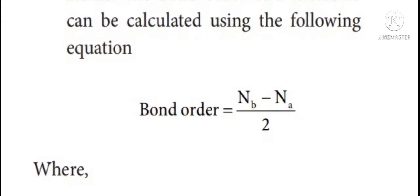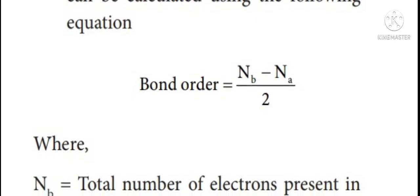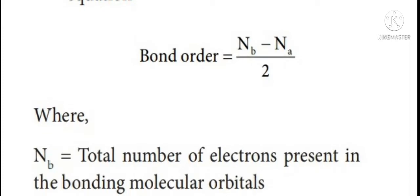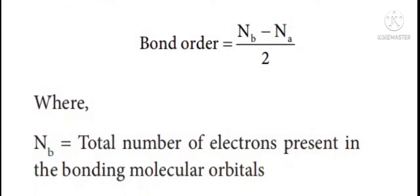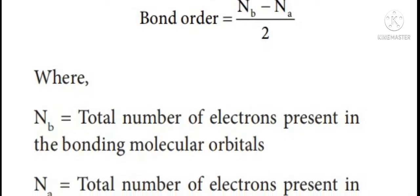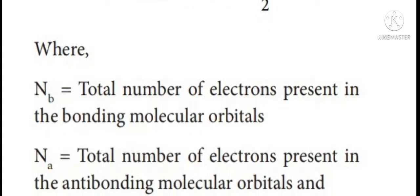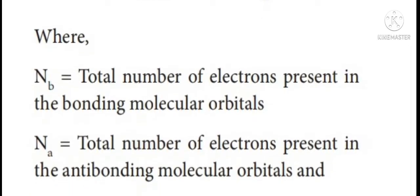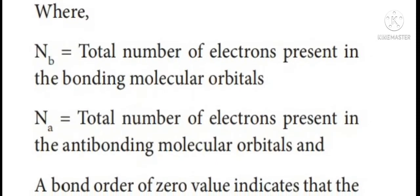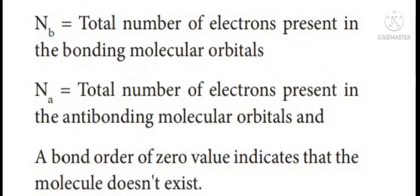If the bond order value is equal to 0, it shows that type of molecule does not exist, or that type of molecule should not be formed. Hence, we completed the salient features of molecular orbital theory. It is an important question — if they ask you to explain molecular orbital theory, you are to give all five points.